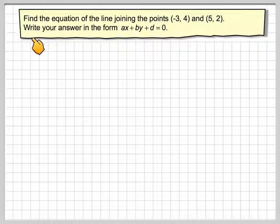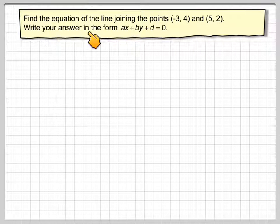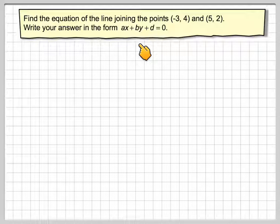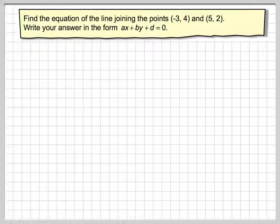What happens if we just have two points and nothing else? Find the equation of the line joining the points (-3, 4) and (5, 2). Write your answer in the form ax + by + d = 0.